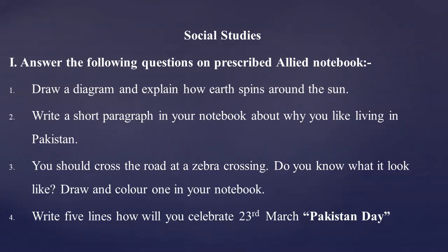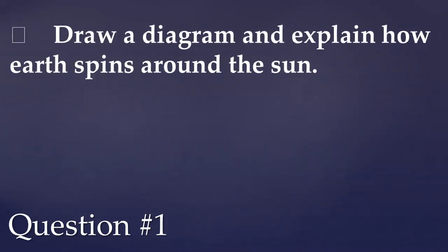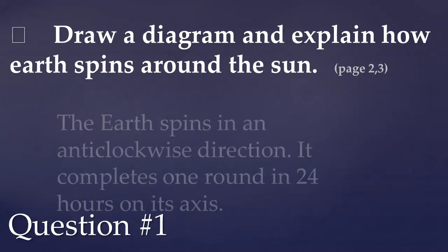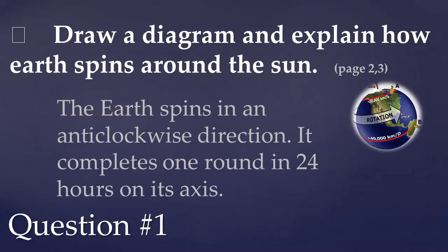Draw a diagram and explain how Earth spins around the Sun. Number 4: write 5 lines about how you will celebrate 23rd March Pakistan Day. This topic is covered on pages 2 and 3 of your Social Studies book. The first point is: the Earth spins in an anti-clockwise direction. Actually, Earth has two movements. Its first movement is on its axis.